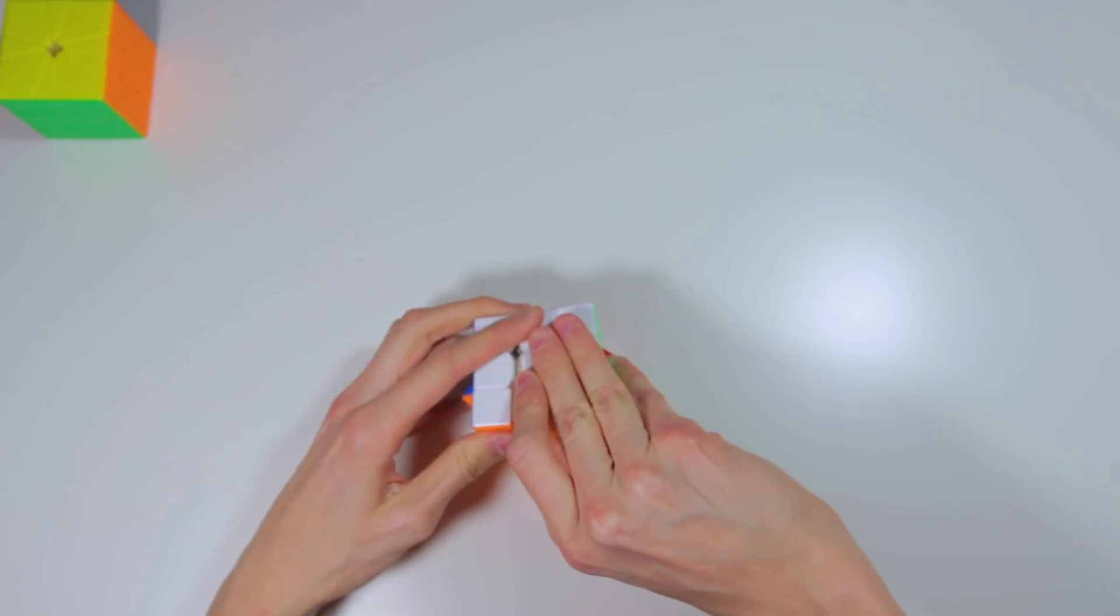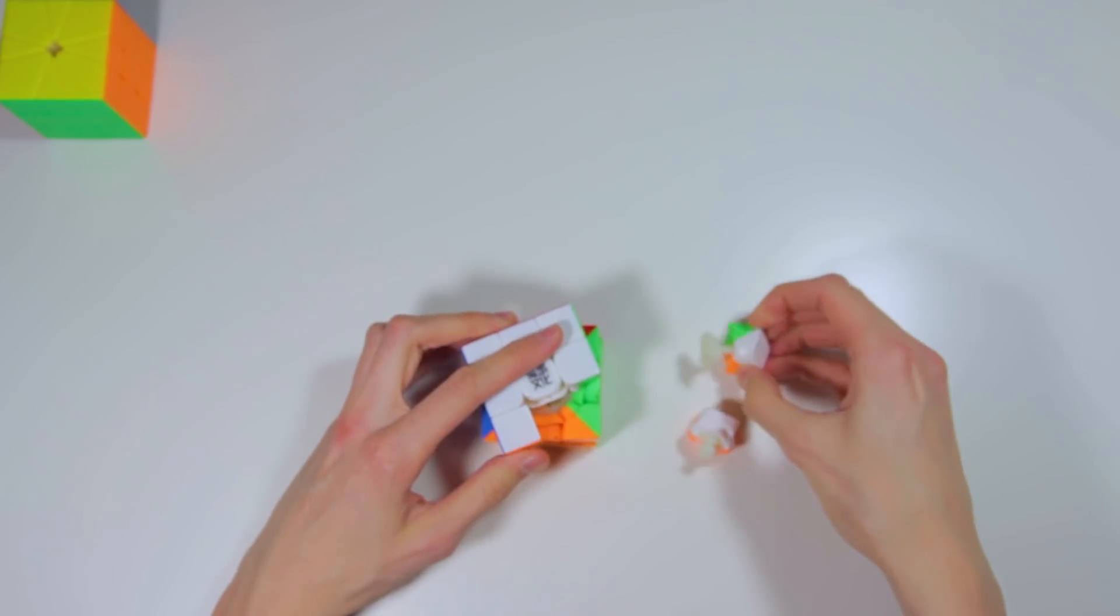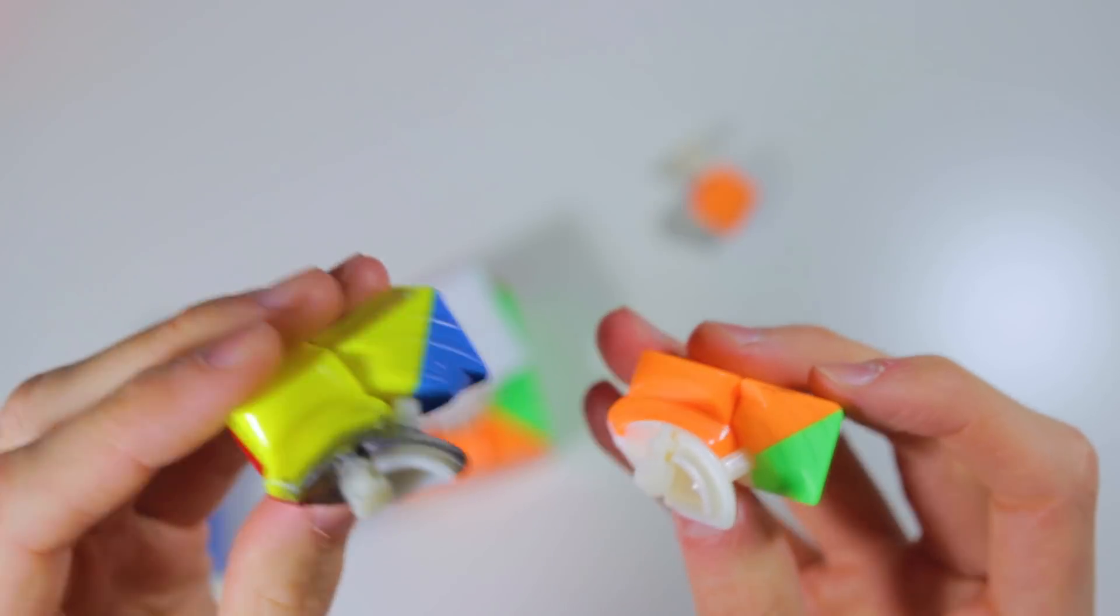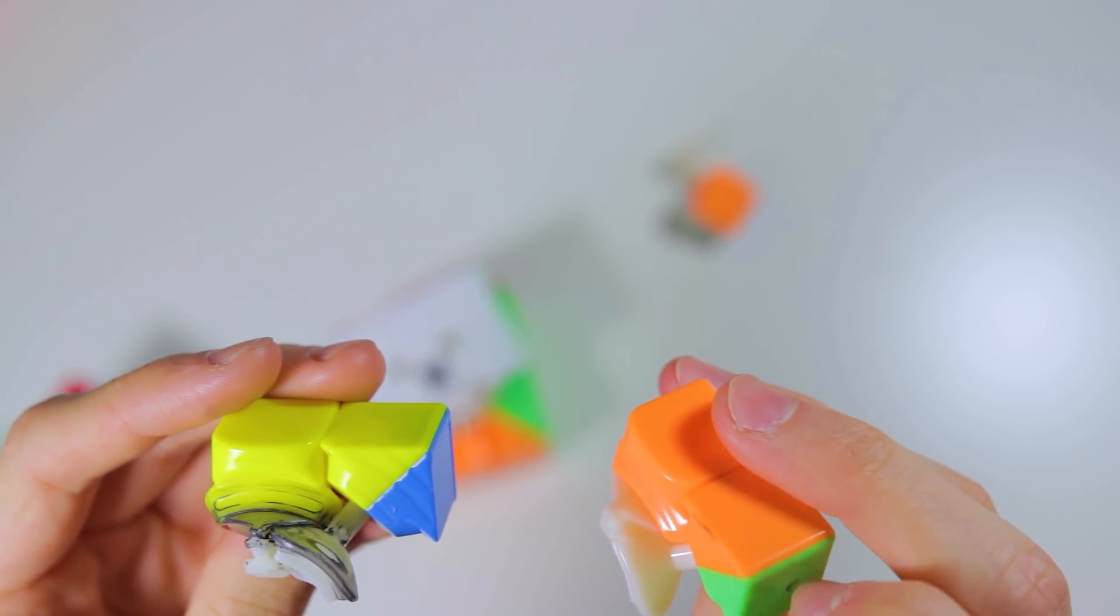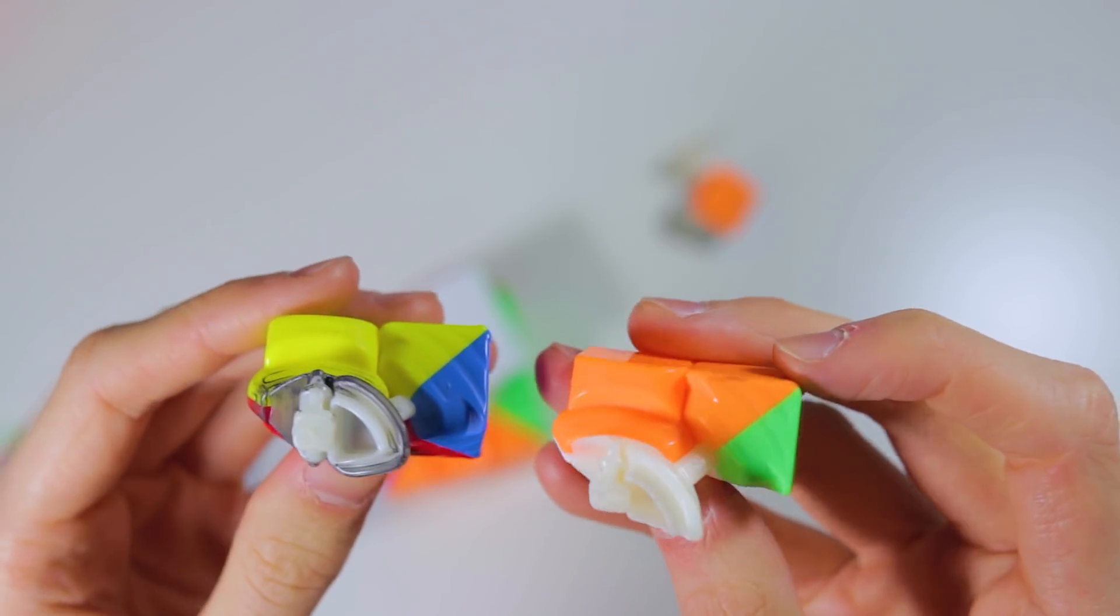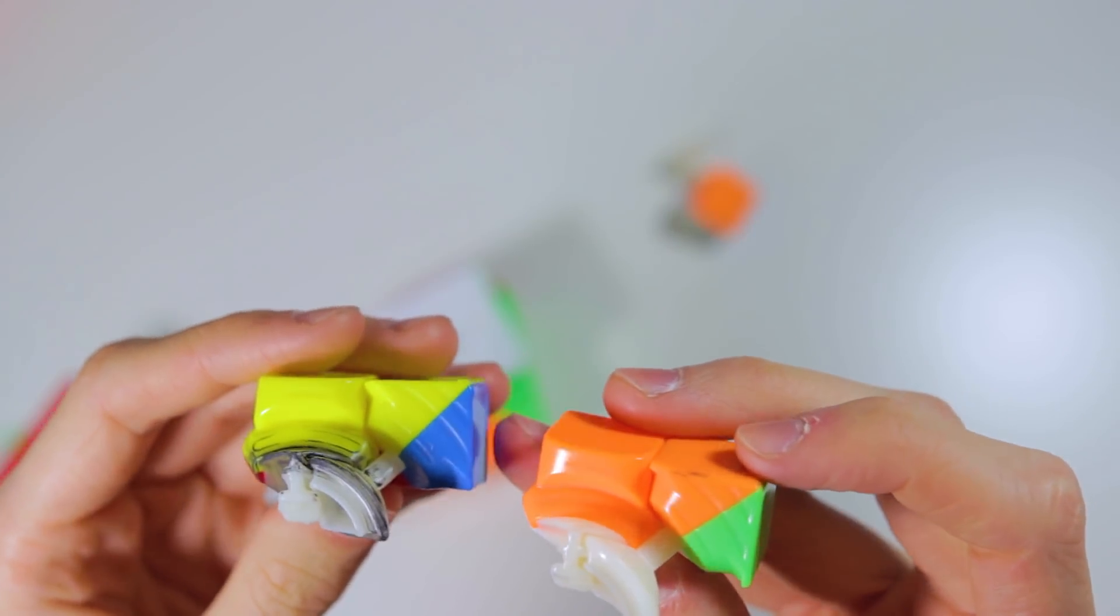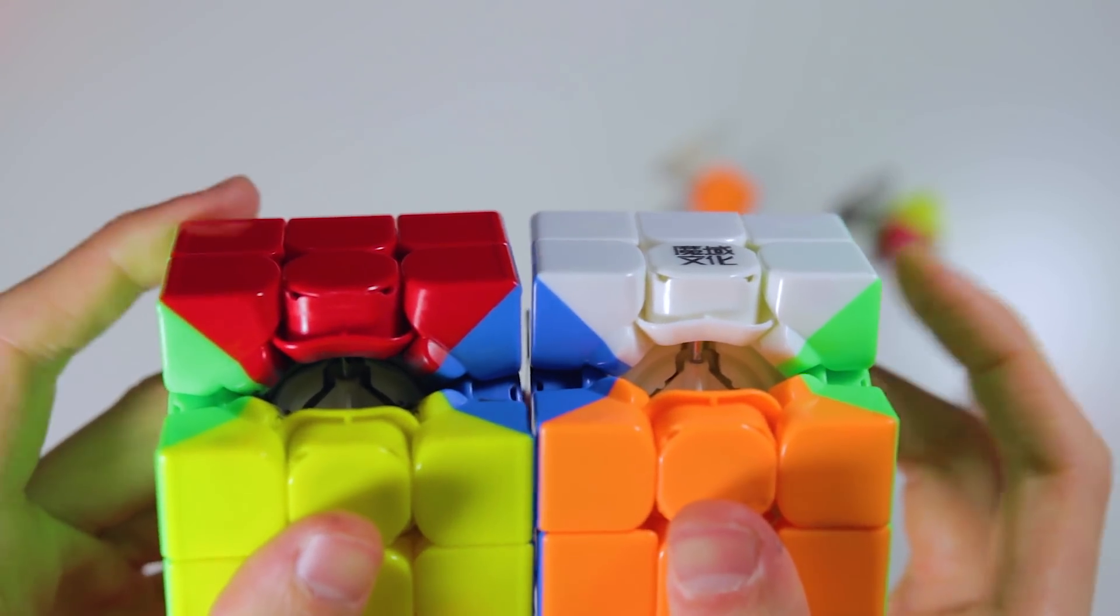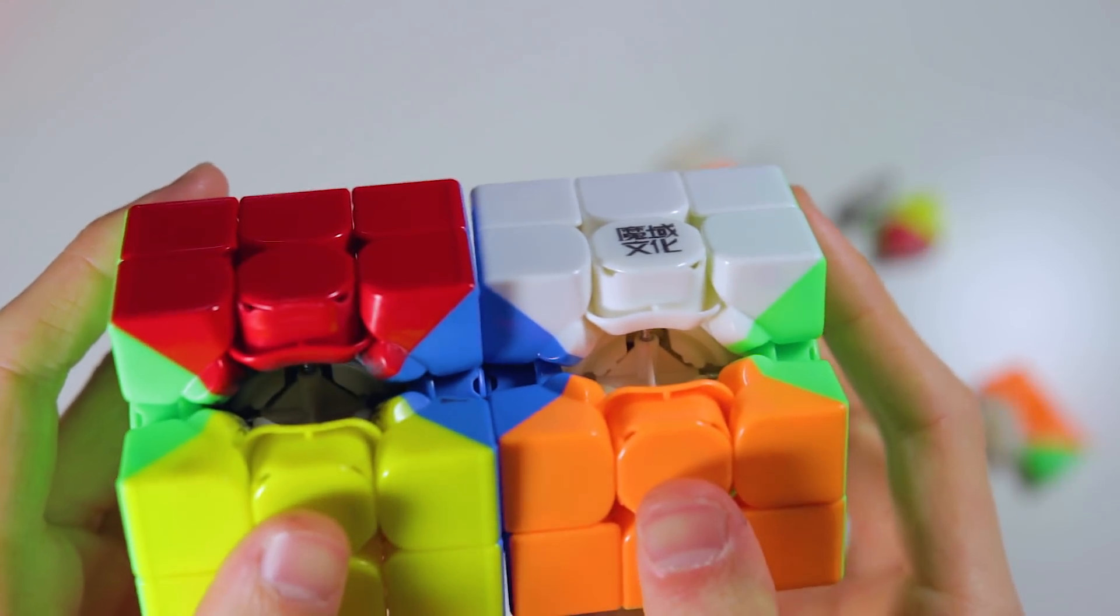Now, what I am curious to see is how this mechanism compares to the GTS-3M and the GTS-2M. So, ignoring the lube, on the left here we have the GTS-3M, and on the right here we have the new WRM. And I definitely see a ton of similarities. In fact, they're nearly the same. These are what the two cores look like, GTS-3M on the left and WRM on the right also looks the same.